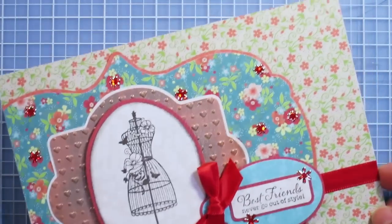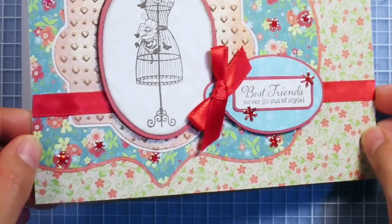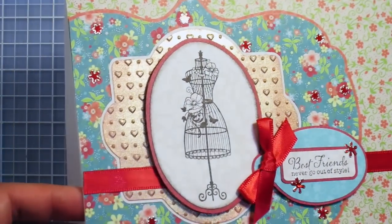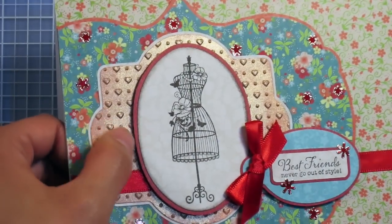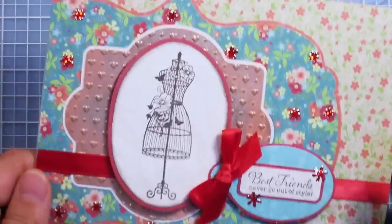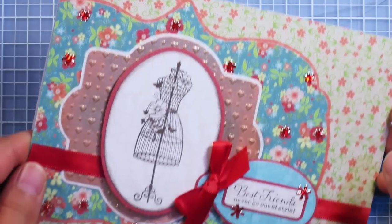Today's card is a best friends card with pretty little posies on it. It's got some bling, embossing, stamping, ribbon, and more. Stay tuned to see how to make this card.